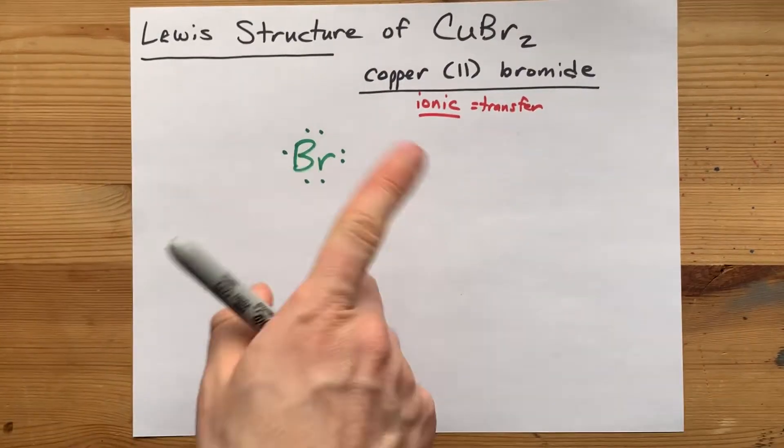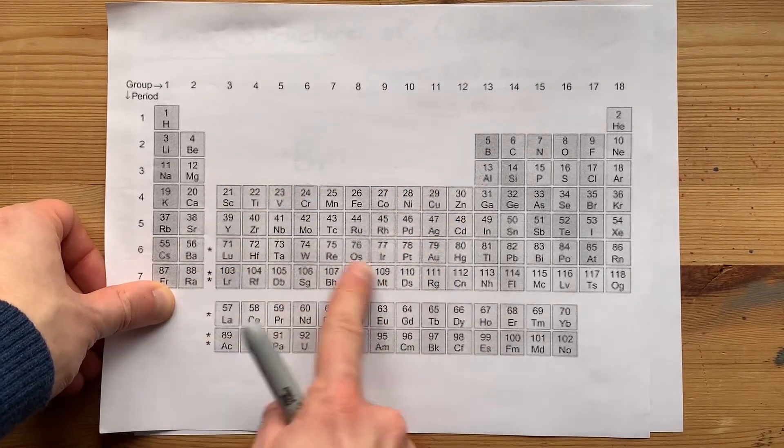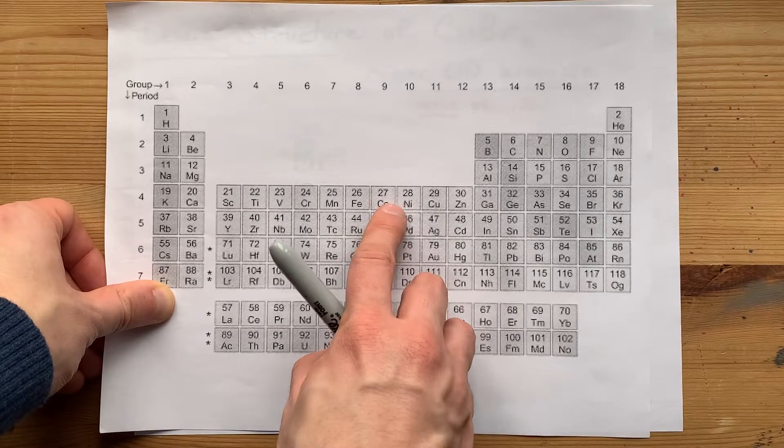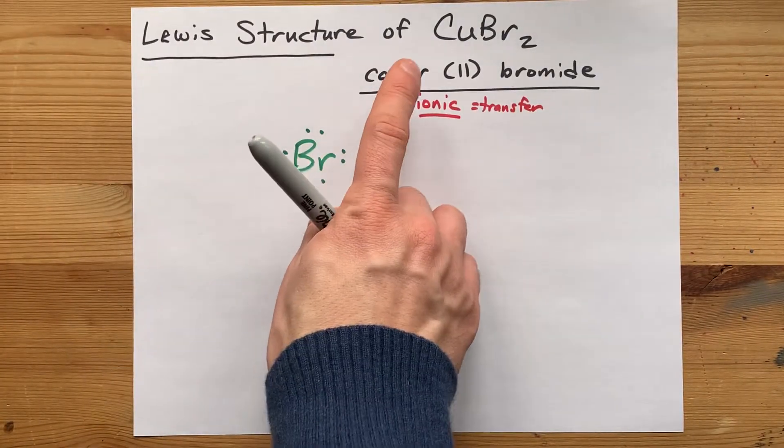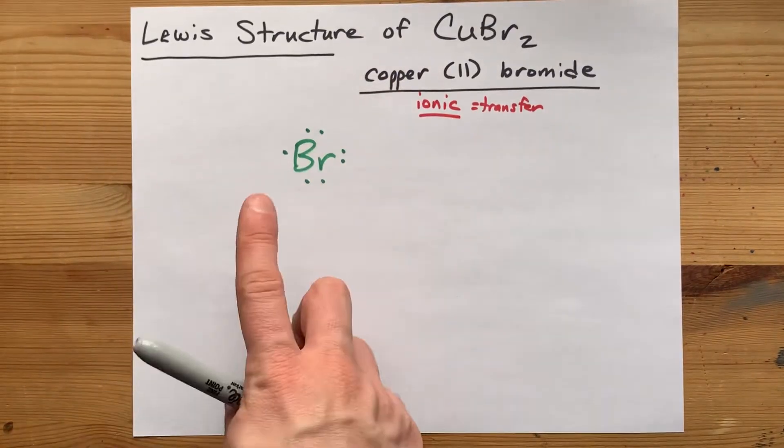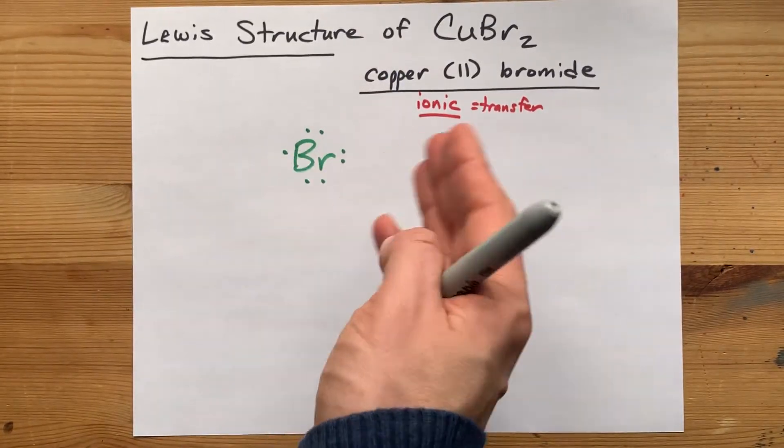Unfortunately, that little shortcut rule doesn't apply here in the transition metals. Here, each of these can have more than one charge. So you've got to draw copper with as many valence electrons as its charge in that molecule.